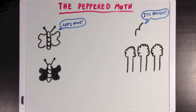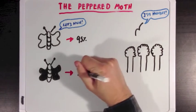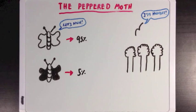And naturally since the trees were white, the white moths were much better at doing this than the black ones. And as a result, around 95% of the peppered moth population was white, while only 5% of the peppered moth population was black.